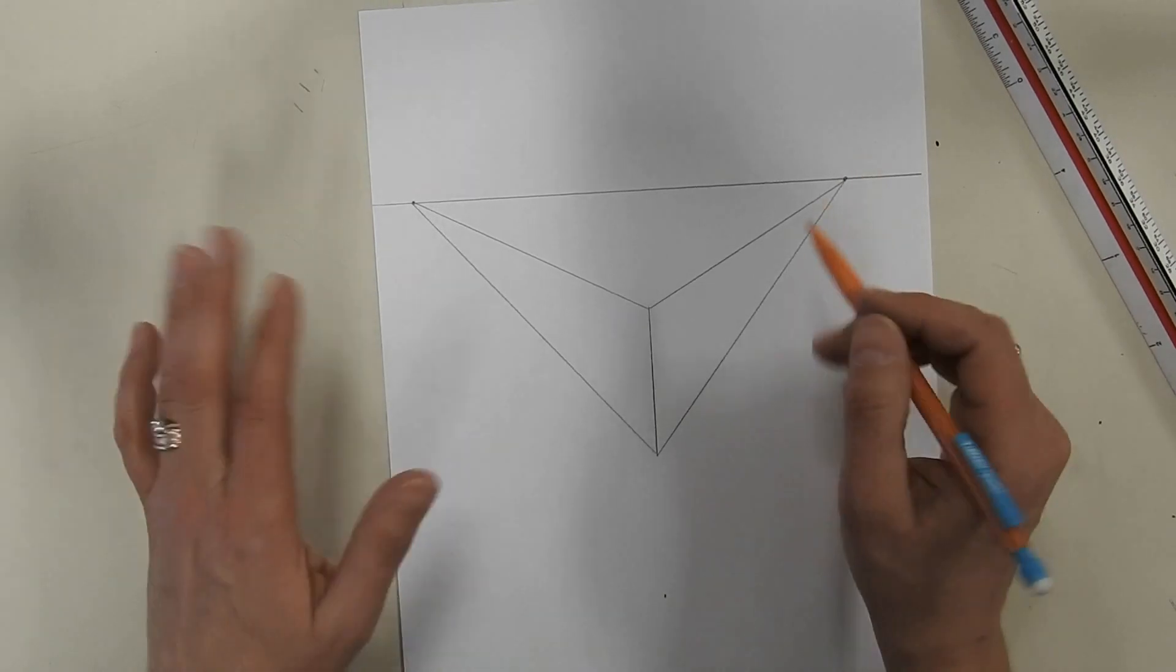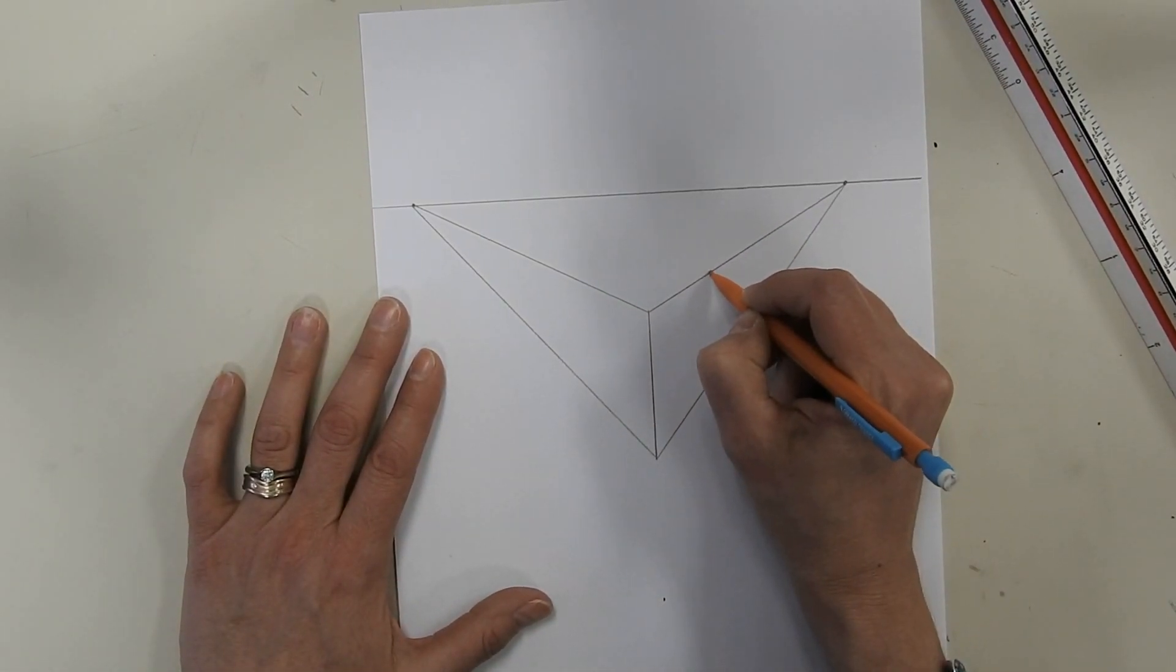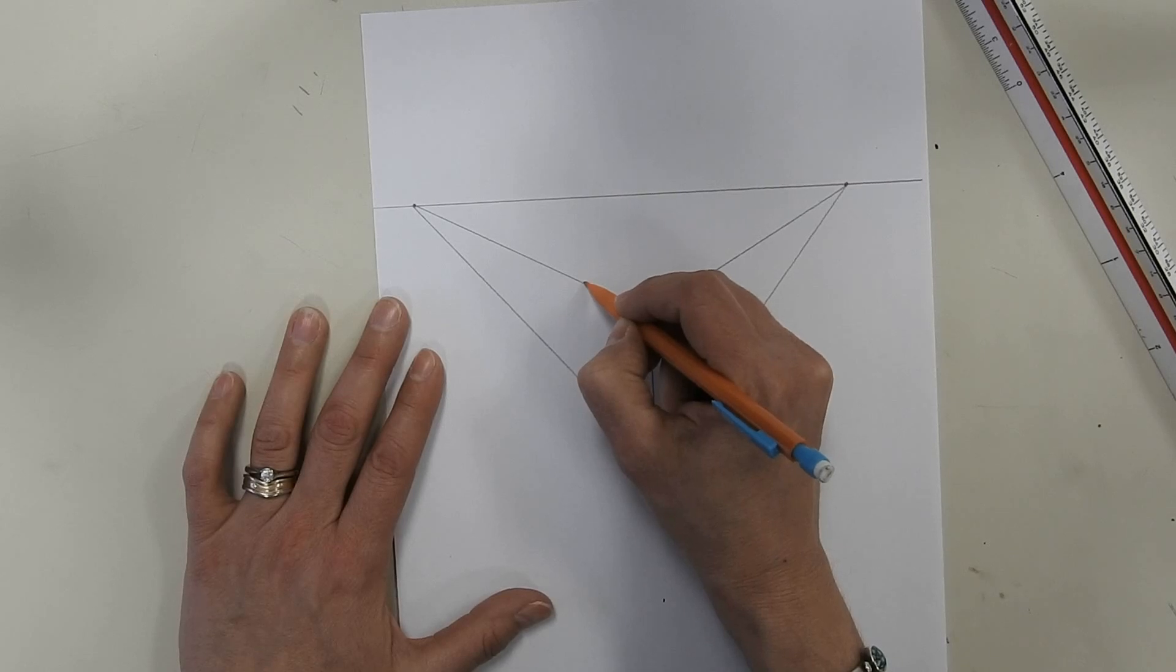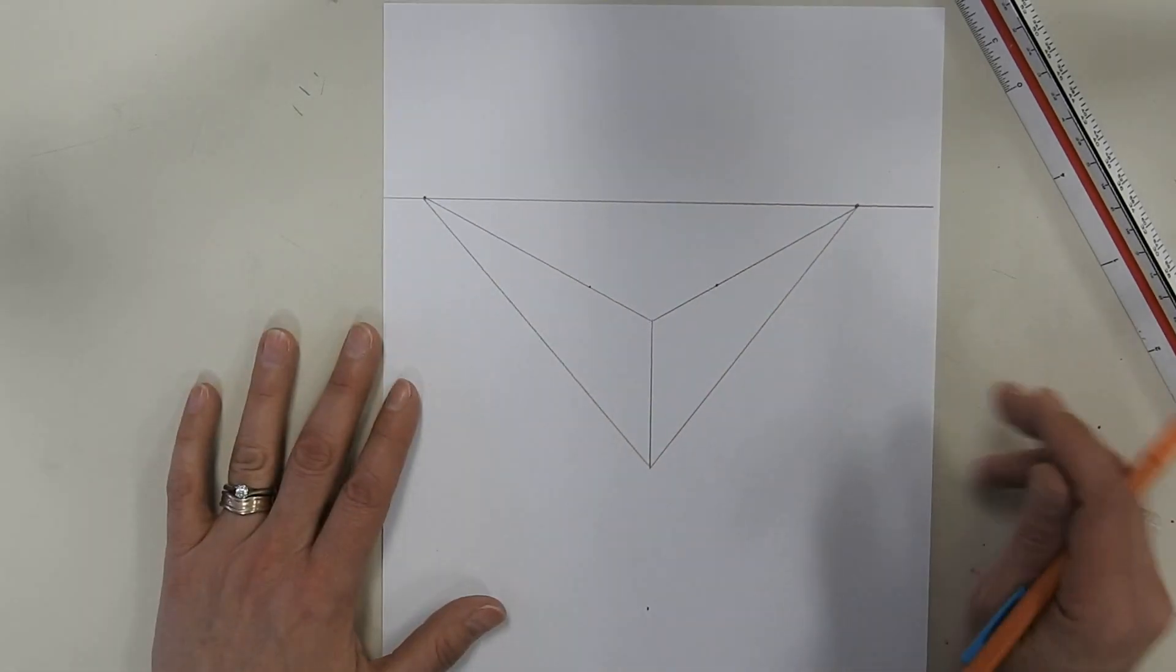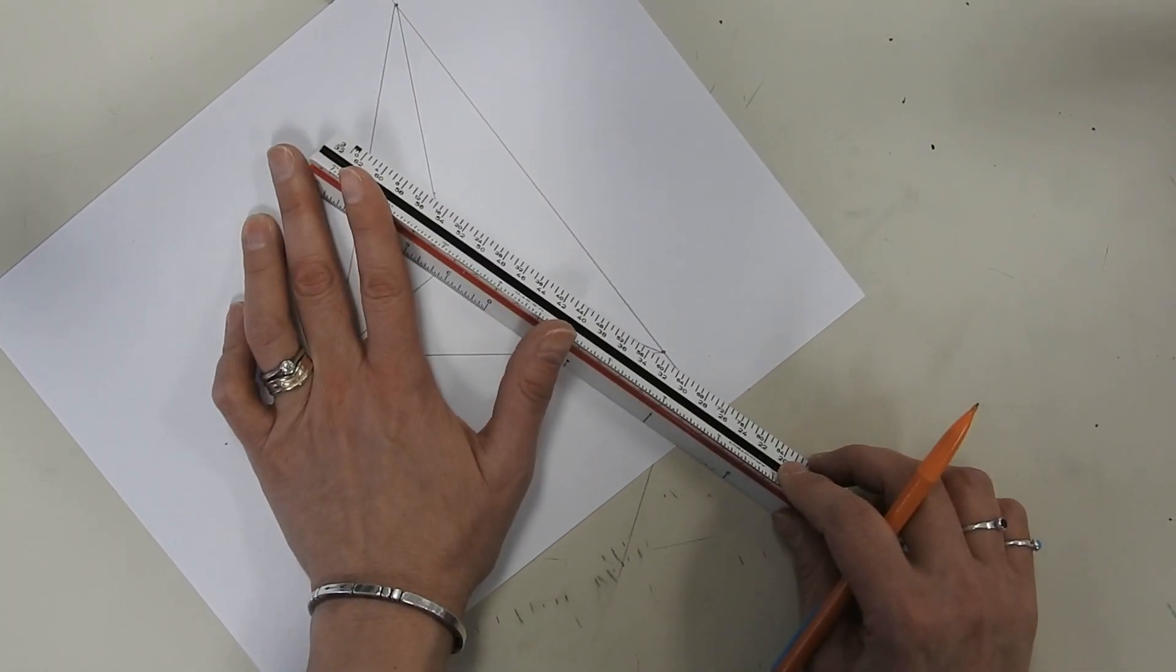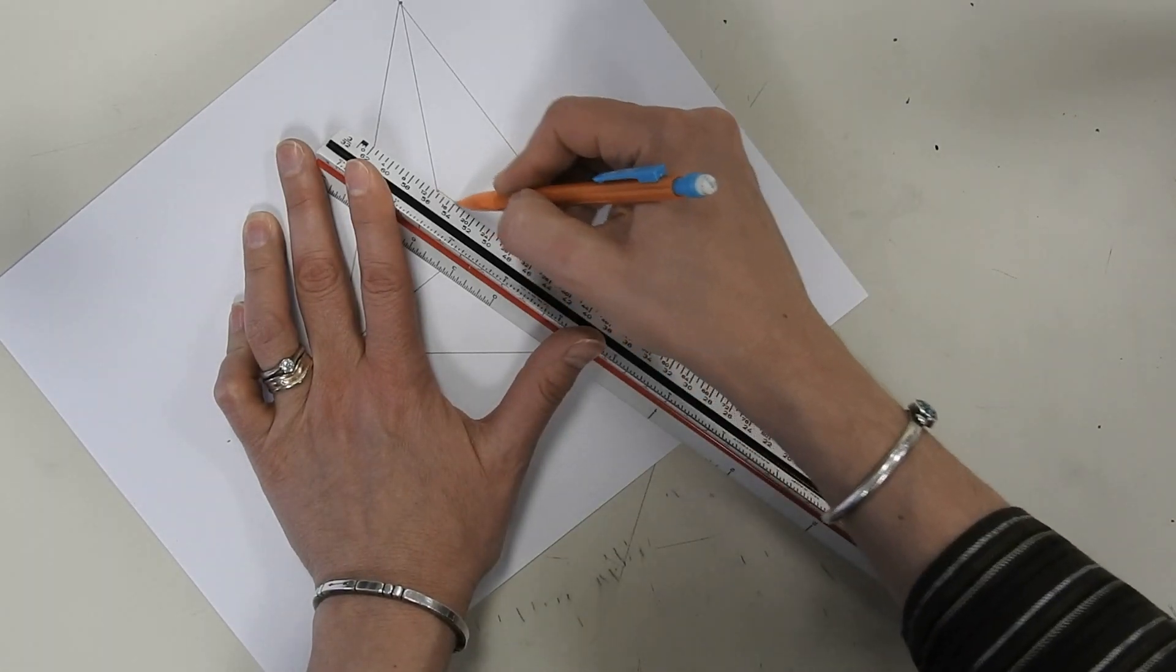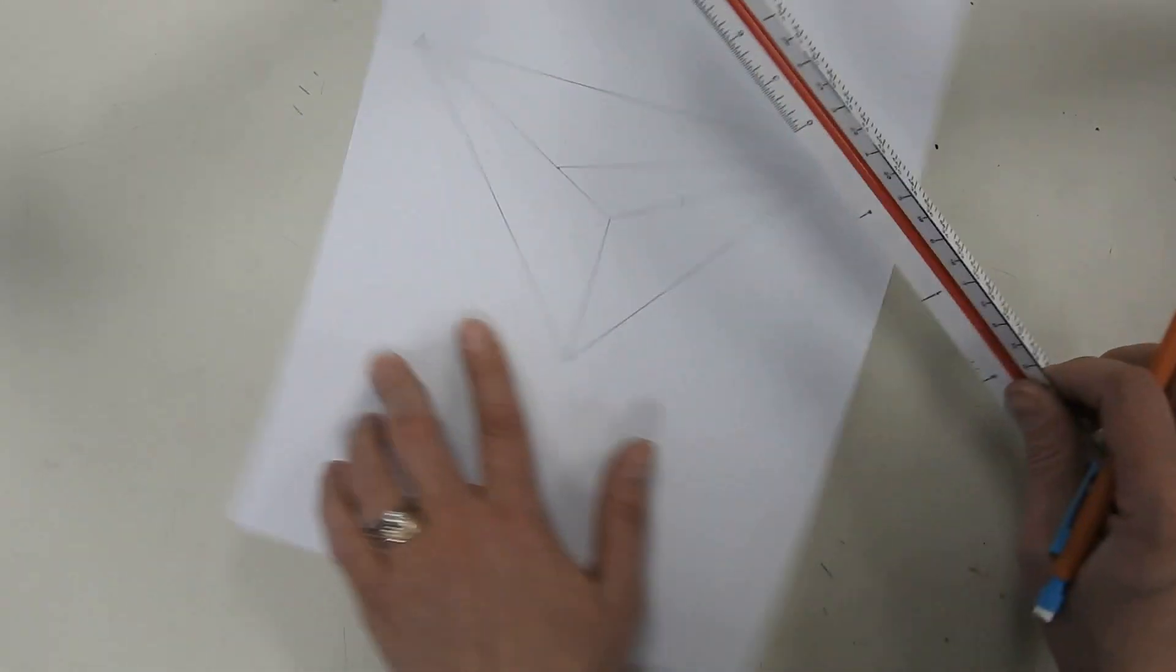Now what I'm going to do, just like two-point, is decide how big I want the shape to be. So I'm going to give myself an indicator on those lines where I want that shape to be cut off. These are going to go to the opposite vanishing point, just like in two-point. Pretty easy so far, right? It's just like two-point.